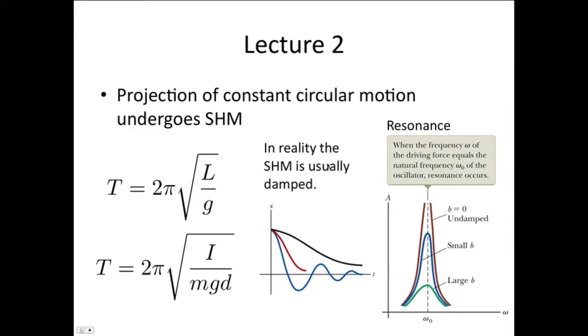We said that in reality, the simple harmonic motion is usually damped, and so we usually get damped oscillations like this, where the amplitude drops off with time. If we have an awful lot of damping, then we don't end up with any of these oscillations. The critical damping is the lowest point at which the oscillations completely disappear.